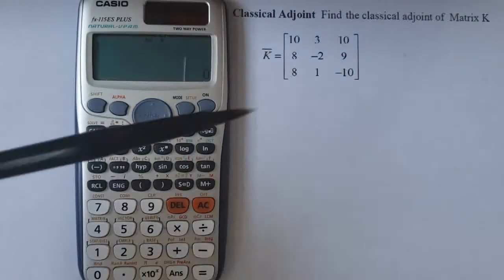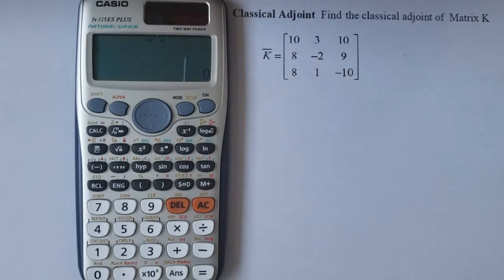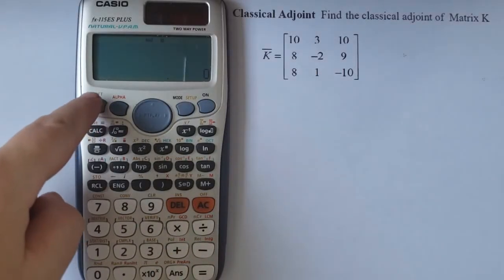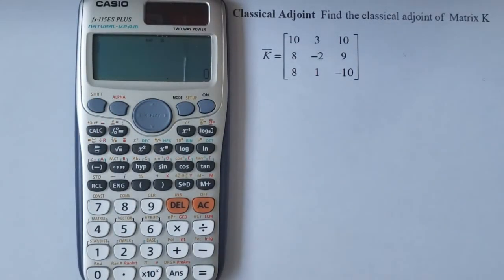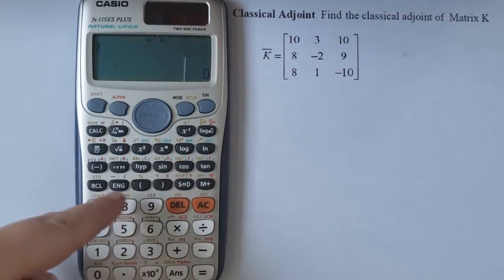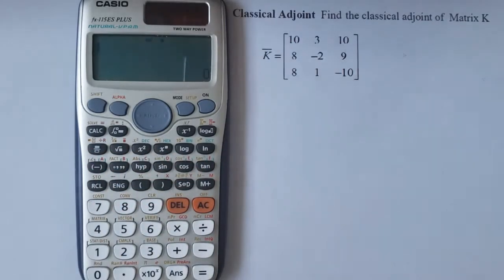We start with the determinant of this matrix. If you're not aware of the shift key, this yellow key here is used to access each of the yellow options above each key. I will use it often now.